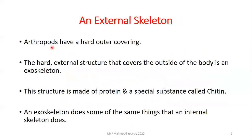Arthropods also have a hard external skeleton called an exoskeleton. 'Exo' means outside — this structure covers the outside of the body. The exoskeleton is made of protein and a special substance called chitin.